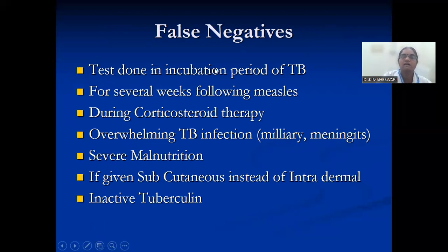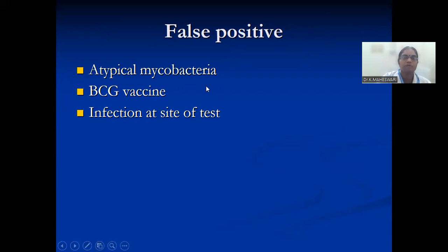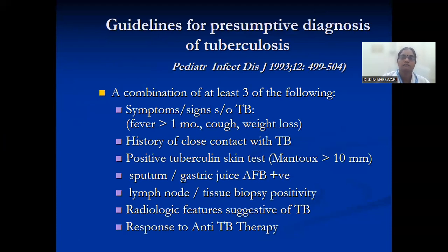False negative Mantoux: test done during incubation period, febrile state following measles, during steroid therapy, overwhelming TB infection, severe malnutrition, or inactive tuberculin dose — all can give false negative results. False positive Mantoux: the patient is not having tuberculosis but the Mantoux is still positive — for example, atypical mycobacteria, BCG vaccine, or infection at the site of the test.